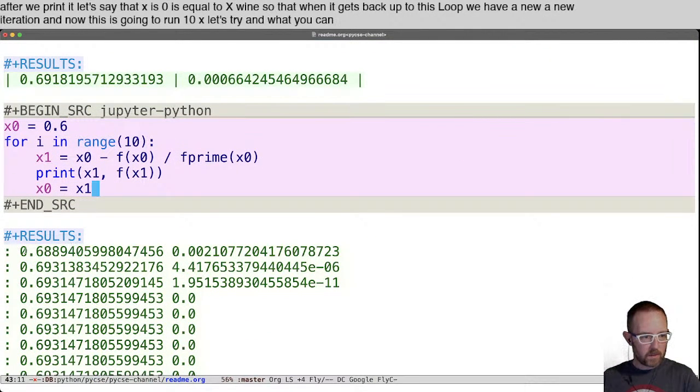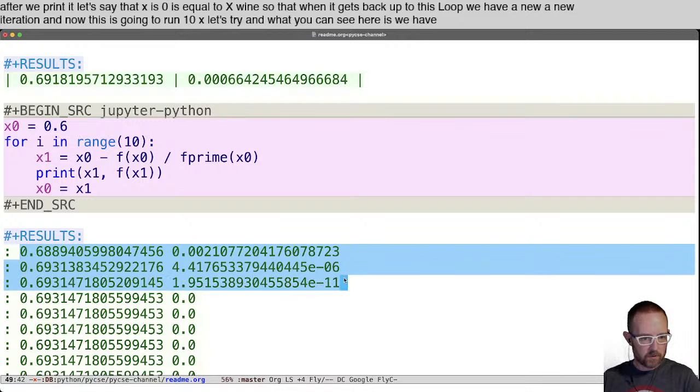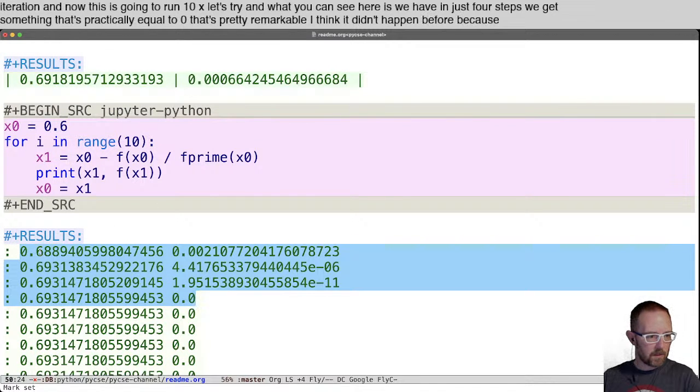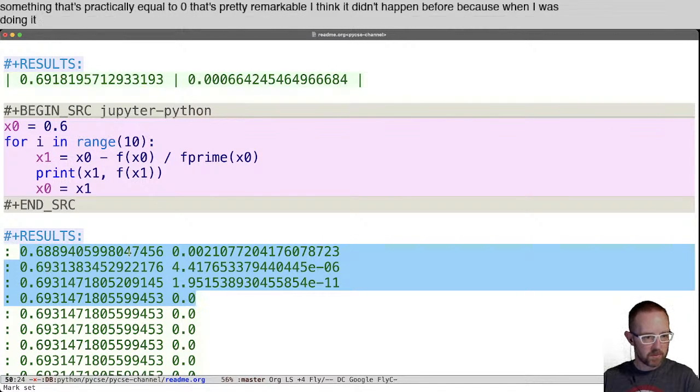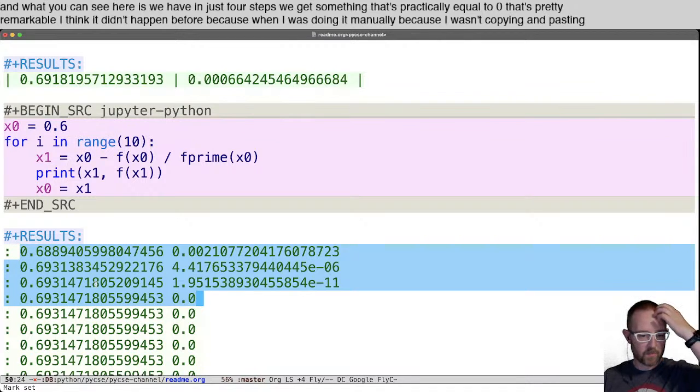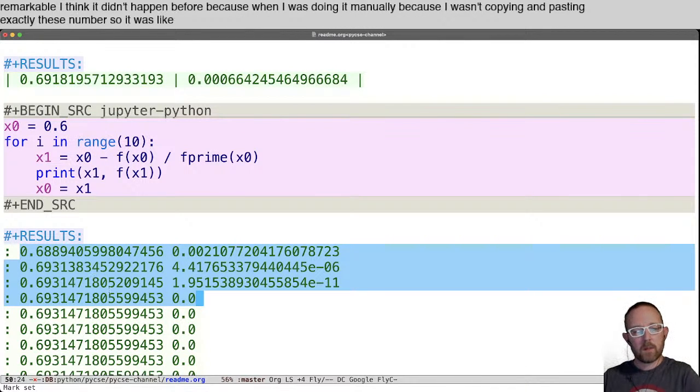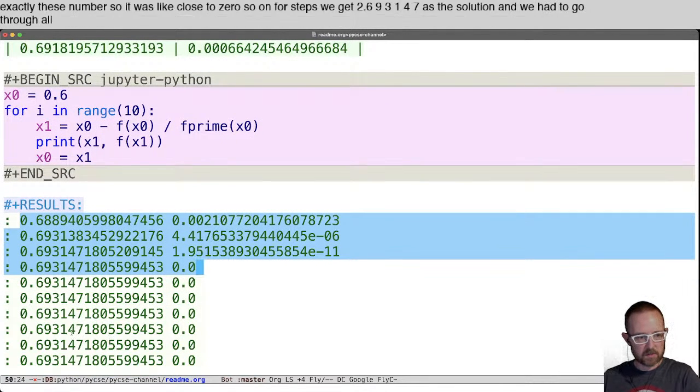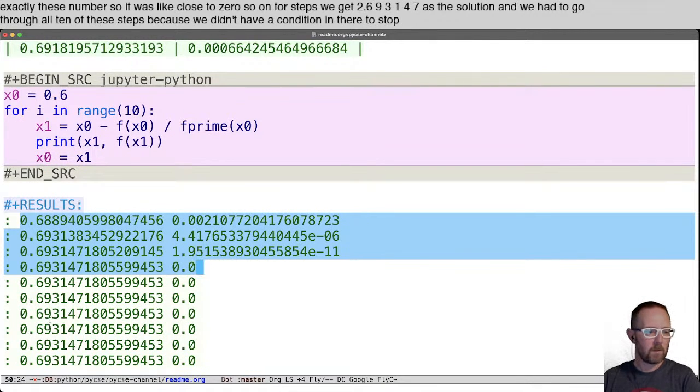And what you can see here is we have in just four steps, we get something that's practically equal to zero. That's pretty remarkable. I think it didn't happen before because when I was doing it manually because I wasn't copying and pasting exactly these numbers. So it was only close to zero. So in four steps, we get to 0.693147 as the solution. And we had to go through all 10 of these steps because we didn't have a condition in there to stop.